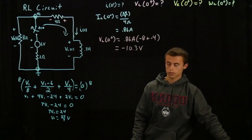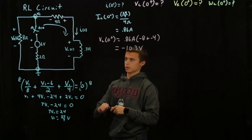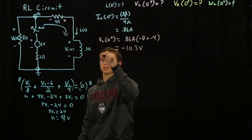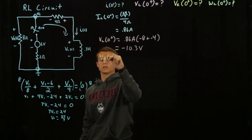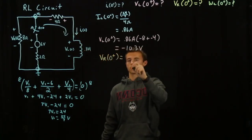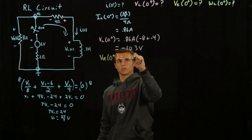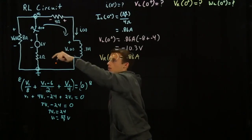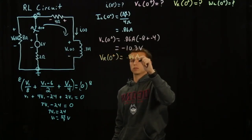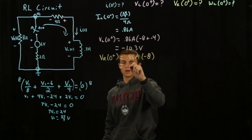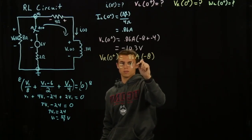So at time 0 to solve for the voltage in the resistor you can do a similar method, actually very much the same thing. At time 0 you're going to be using the same current through the inductor value, 0.86 amps, and you'll be multiplying it by the 8 ohm resistor going through there. And this comes out to negative 6.7 volts.